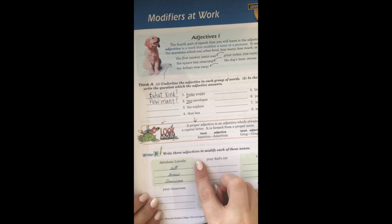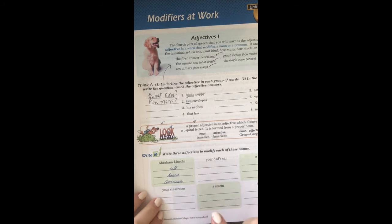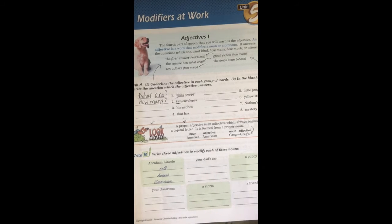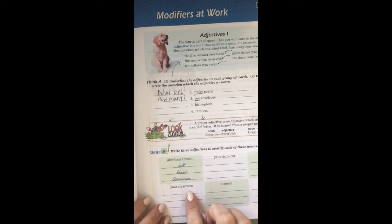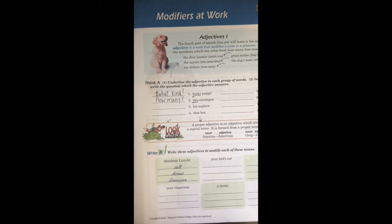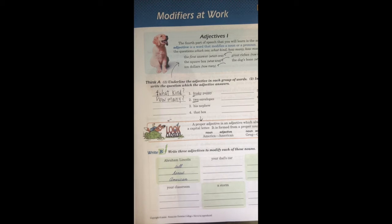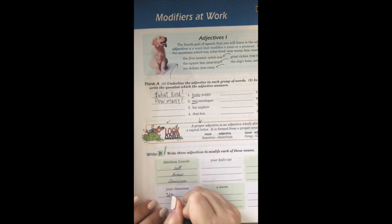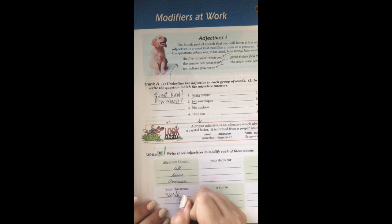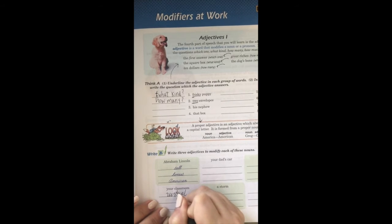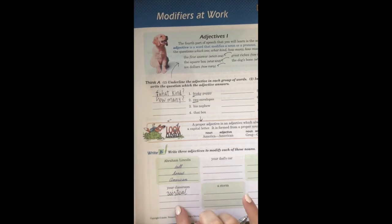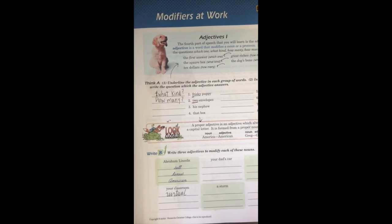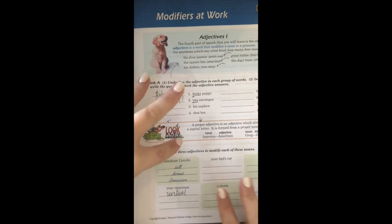Here you're going to write three adjectives to modify each of the nouns given. These answers will be different for everybody — you're going to make up your own. For example, we have 'your classroom.' This would be interesting to describe this year. One example: 'virtual' — that's definitely a describing word for our classroom right now. You'll come up with two more. The other nouns include your dad's car, a puppy, a storm, and a friend. If you can't think of personal ones, just make up any that make sense for the subject.